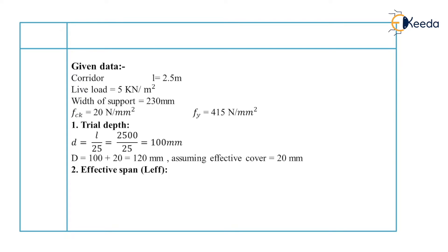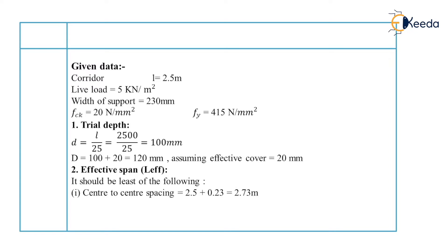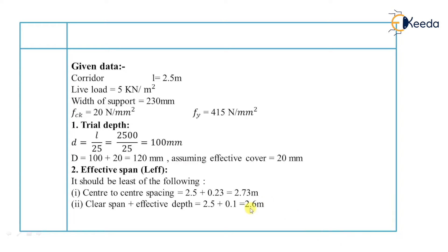Our second step is to calculate the effective span, which is the lesser value of center-to-center spacing or clear span plus effective depth. Center-to-center spacing equals 2.5 m plus 0.23/2 plus 0.23/2, which equals 2.73 m. Clear span plus effective depth equals 2.5 m plus 0.1 m, which equals 2.6 m. We take the lesser value, so effective span equals 2.6 m.